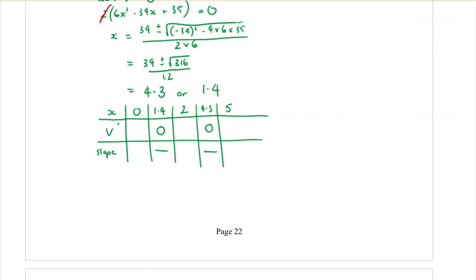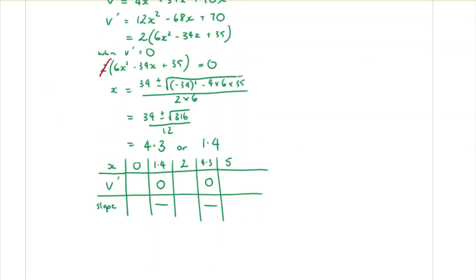Subbing into the derivative: at x = 0 you get 70; at x = 2 you get negative 18; at x = 5 you get 30. At the turning points x = 1.4 and x = 4.3, the derivative is 0. Positive 70 means sloping uphill, negative 18 is downhill, positive 30 is uphill again. So x = 1.4 goes up and over — that's a maximum — and x = 4.3 goes down then up — that's a minimum. So x = 1.4 is the one we're after.